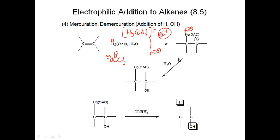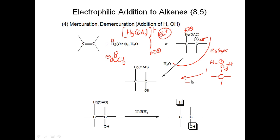In the two-step mechanism, first water adds to form an oxonium ion, then in the second step H+ is lost to give OH on the other carbon. You can think of mercuration as the addition of E+ and water: E+ adds to the carbon with the most hydrogens (Markovnikov's rule) and water adds to the carbon with the least number of hydrogens. The net result is that H and OH are added across the double bond.